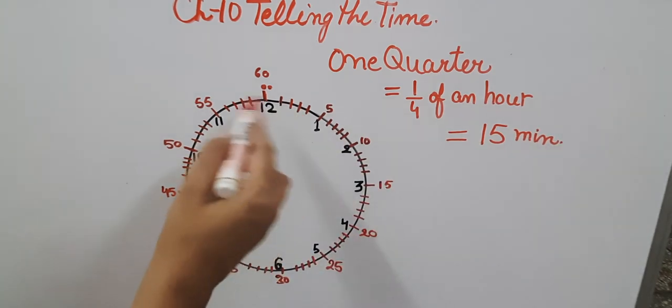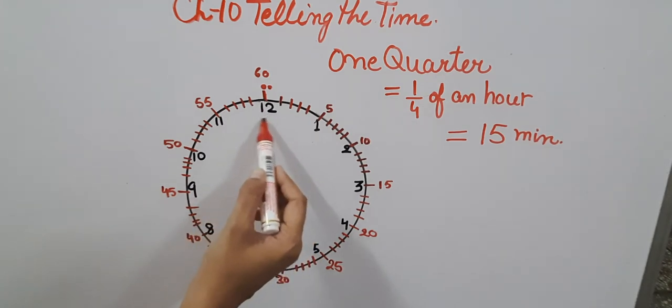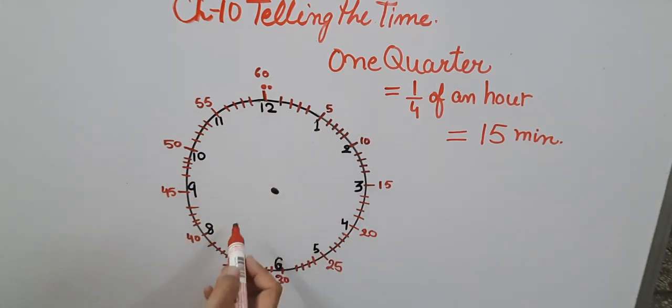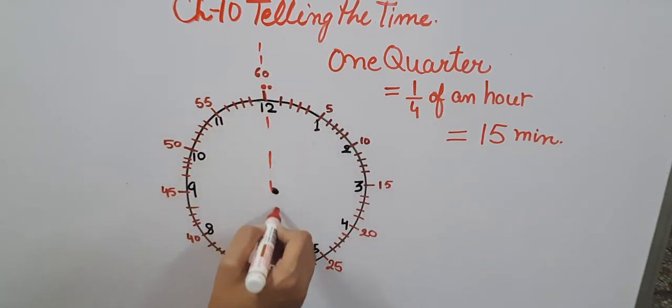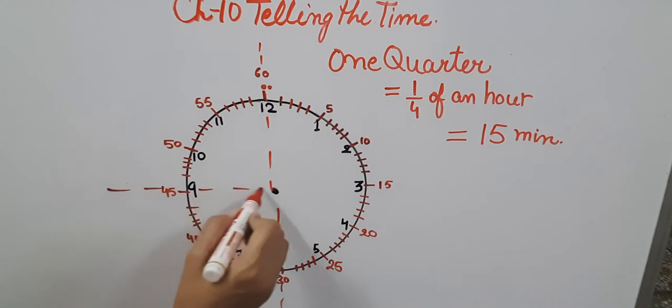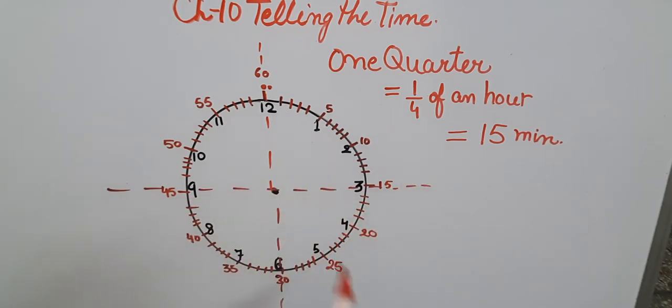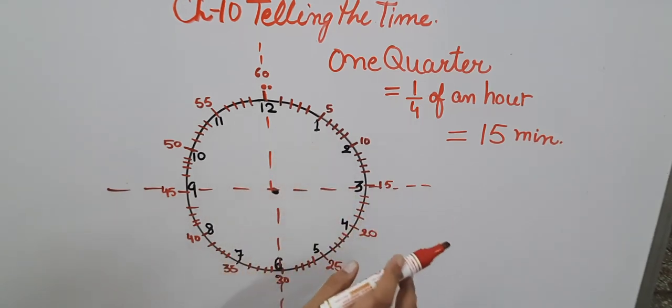Now as this is a circular thing with 12 numbers in total, we can divide the clock into 4 equal parts or 4 quarters. That is why we have said this as a quarter only. Quarter means 1 part out of 4 equal parts. Each quarter consists of 15 minutes.